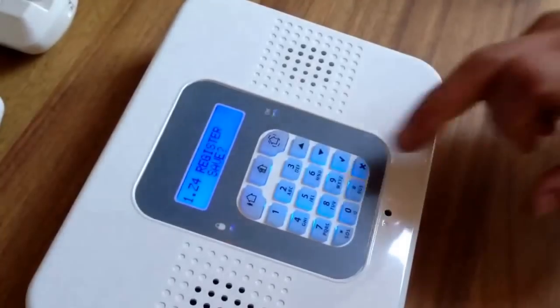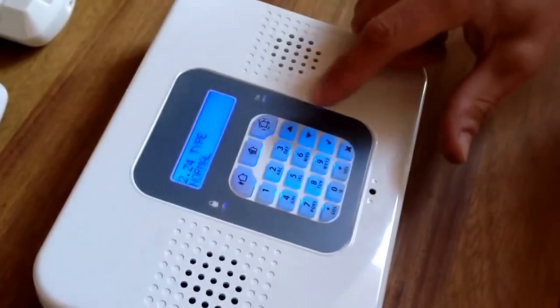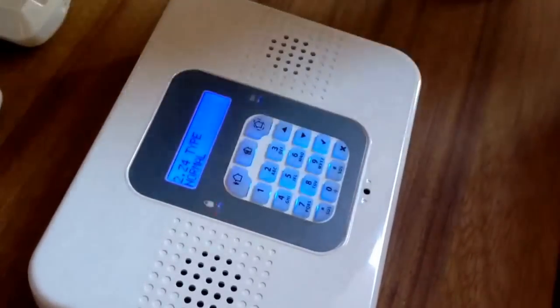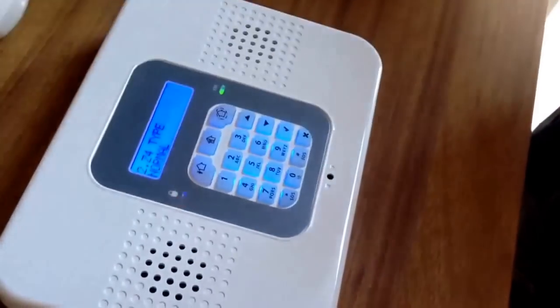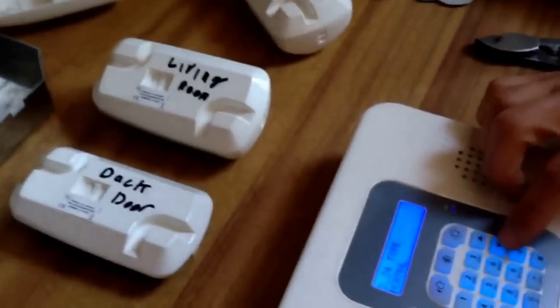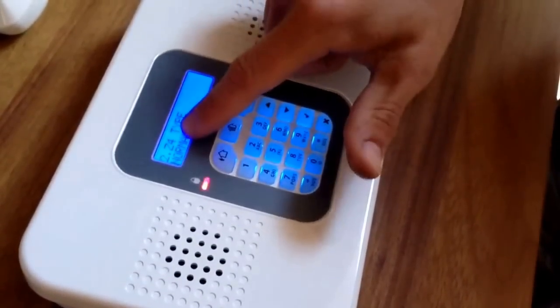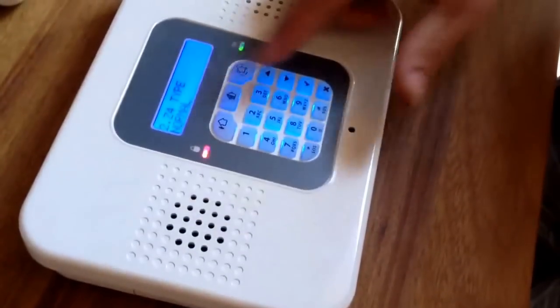It comes up register, save. Click tick. Now this would be set to normal type. For the front door sensor, you'd want entry exit, but for any other sensors around the house, you want to set them to normal, which is the first option.